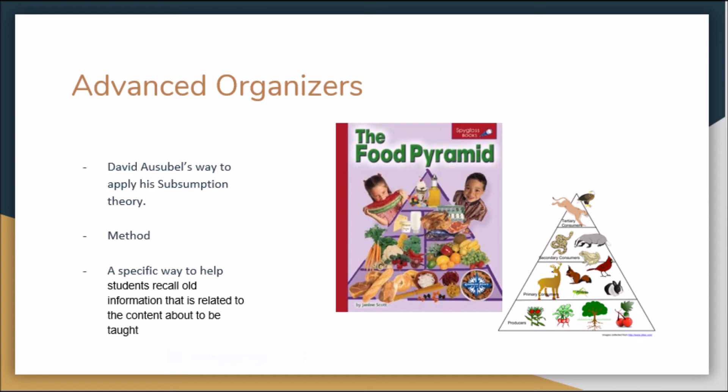An example of an advanced organizer would be having students read an article on the types of food we eat as humans the night before the food chain is then taught in class. The advanced organizer in this scenario would be the reading article.